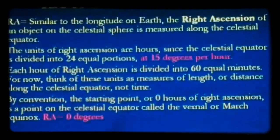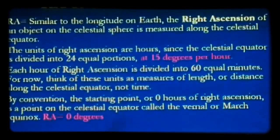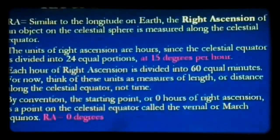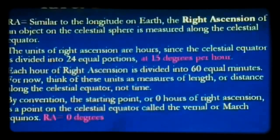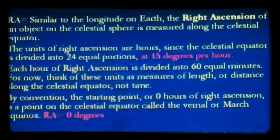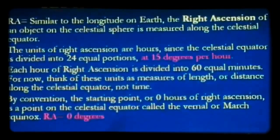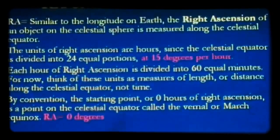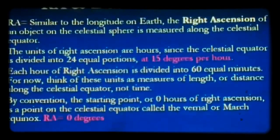Each hour of right ascension is divided into 60 equal minutes. Think of these units as measures of length or distance along the celestial equator, not time. When we talk about an hour of right ascension, we mean 15 degrees, not an hour on your watch. Inside those 15 degrees, you have 60 equal minutes. By convention, the starting point — zero hours of right ascension — is the vernal or March equinox, where right ascension equals zero degrees.